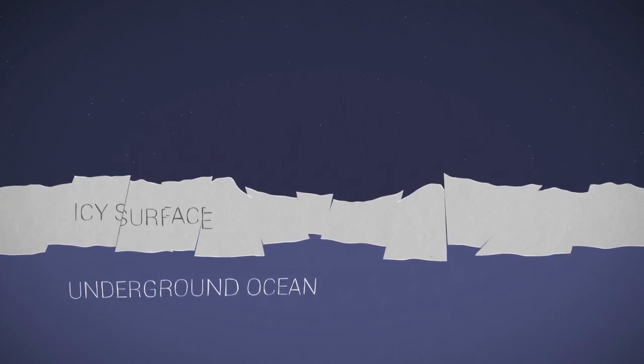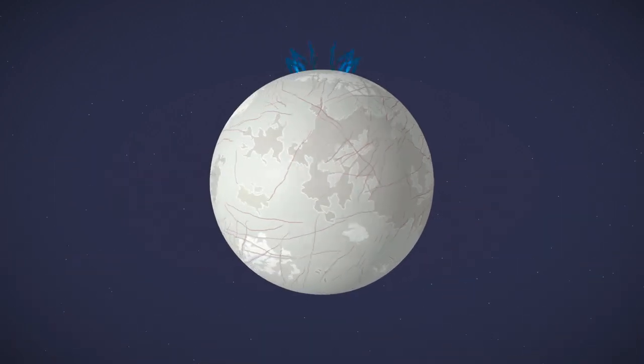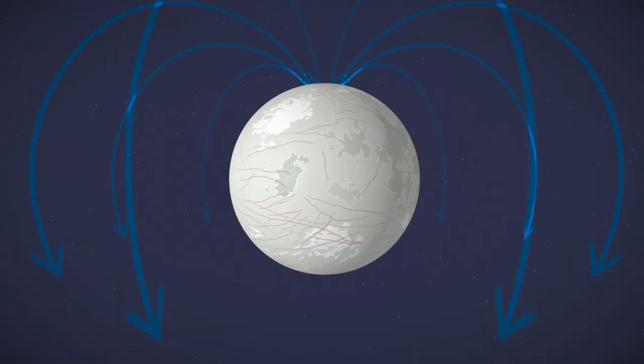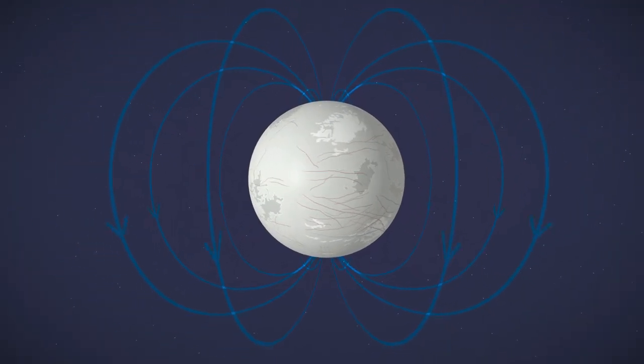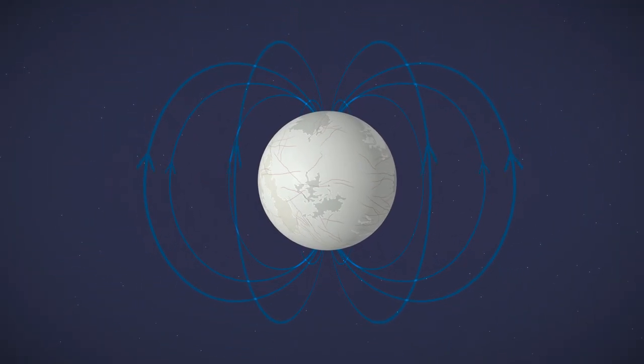And the final, most compelling clue? Europa's changing magnetic field. What's under the surface conducting that much electricity? A hidden saltwater ocean would explain it.